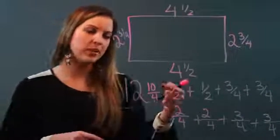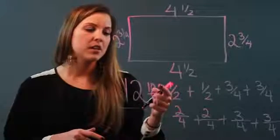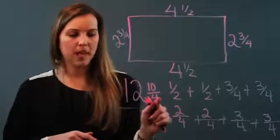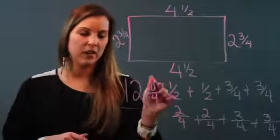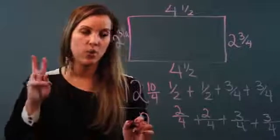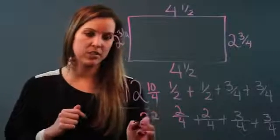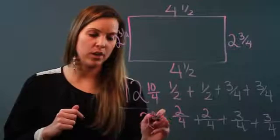But I know that this is an improper fraction so I can go ahead and ask myself how many times does four go into ten? It goes into ten two times with two left over. So I'm going to take that two as the remainder and put it over four.